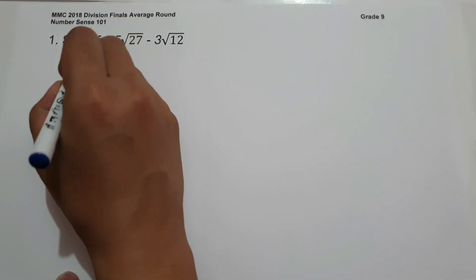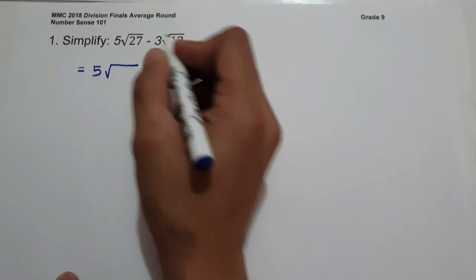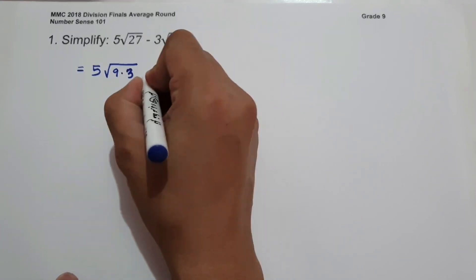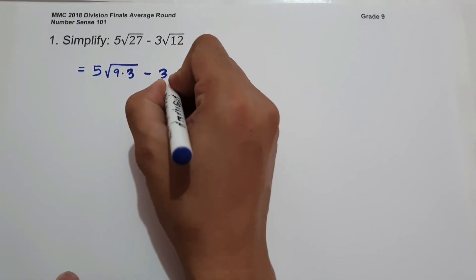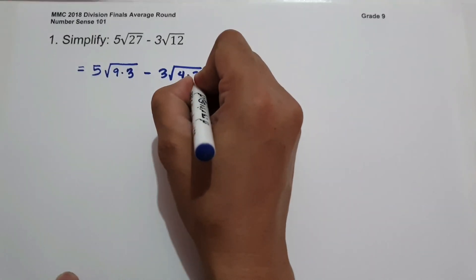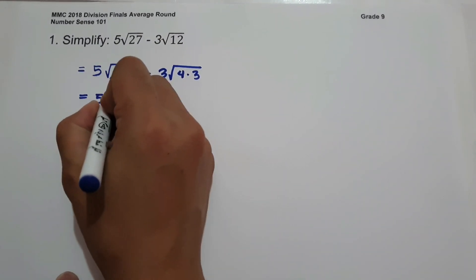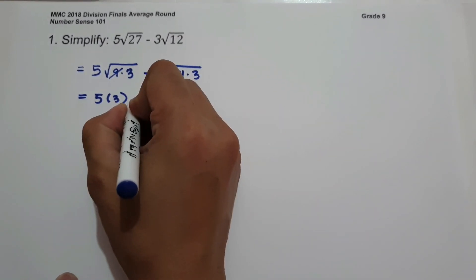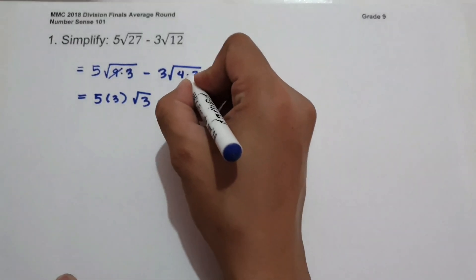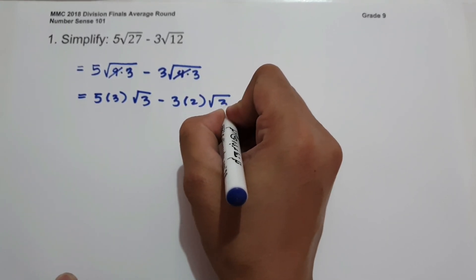To simplify, we are going to factor the radicands. So we have 5, and the factors of 27 are 9 and 3, minus 3, and the factors of 12 are 4 and 3. The square root of 9 is 3, so we have 5 times 3 then square root of 3, minus 3, the square root of 4 — that is 2 — then the square root of 3.